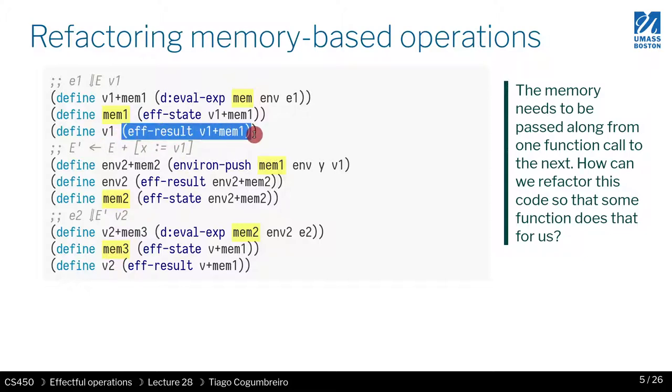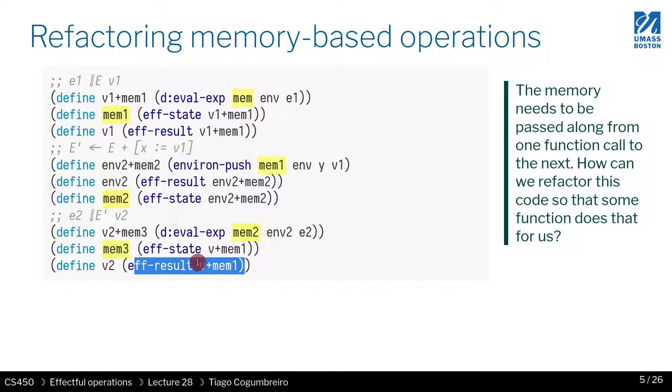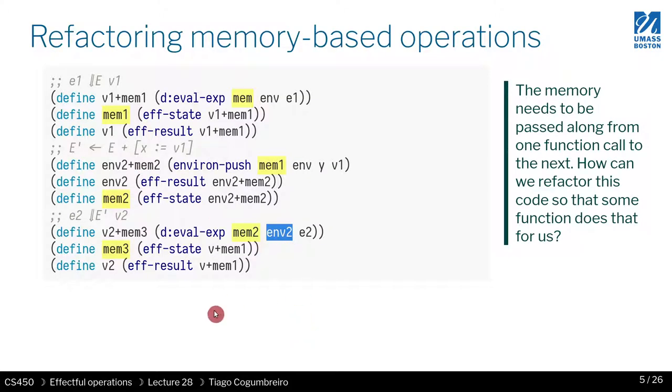V1 is obtained from the results and V2 is obtained from the result. So you can also see this repetition of somehow passing the value along. V1 is used in the rest of the computation, similarly E and 2 is used in the rest of the computation.